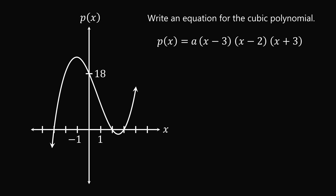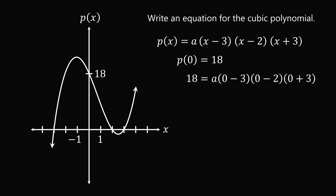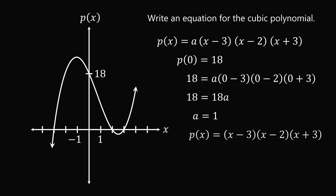To solve for a, we need another point on the graph. We have the y-intercept at (0, 18), meaning p of 0 equals 18. Substituting x equals 0 gives: 18 equals a times (0 minus 3) times (0 minus 2) times (0 plus 3). This simplifies to 18 equals 18a, so a equals 1. The cubic polynomial is p of x equals (x minus 3)(x minus 2)(x plus 3).